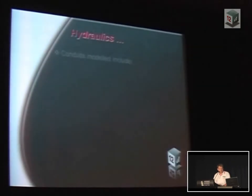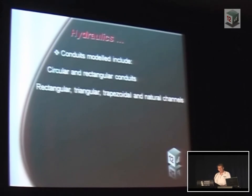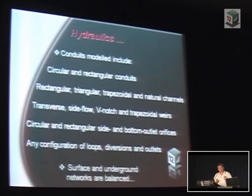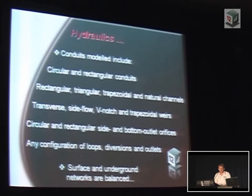We currently do circular and rectangular conduits, and rectangular, triangular, trapezoidal, and natural channels. Our surface routing, unlike the rational formula where bypass flow just goes from A to B, actually defines a section — if it goes uphill it tries to route the flow uphill, and if it can't, sometimes it'll bring the flow from a downstream pipe back upstream. We also do weirs, transverse V-notch and fly-flow weirs, and circular, rectangular side and bottom outlet orifices for basins. We can have any combination of loops and diversions in our model, and everything's balanced.